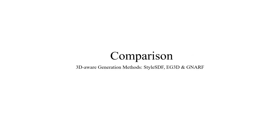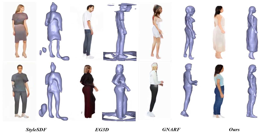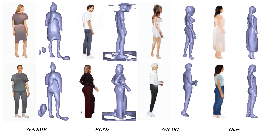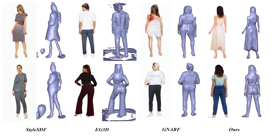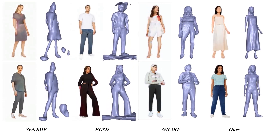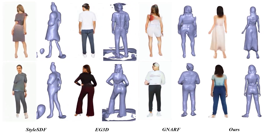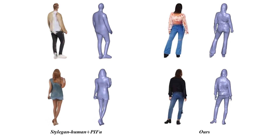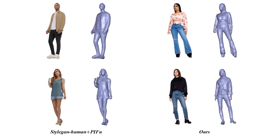We compare our method with 3D-aware generation methods: StyleSDF, EG3D, and GNARF. All these methods fail to generate correct and fine-detailed geometry, and the appearance lacks view consistency due to super-resolution models. We also compare with a baseline of StyleGAN-Human plus PIFuHD — its geometry lacks detail and the texture appears blurred.